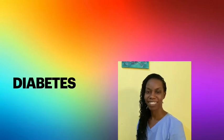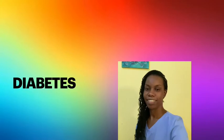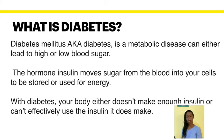What is diabetes? Diabetes is a metabolic disease that causes blood sugar to go either high or low. The hormone insulin moves sugar from the blood into the cells to be stored as energy. With diabetes, the body either does not produce enough insulin, or the body cannot effectively use the insulin that it produces.